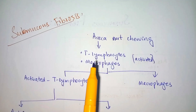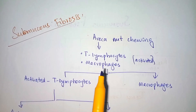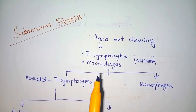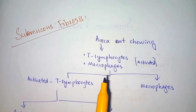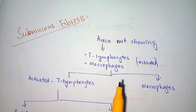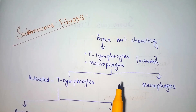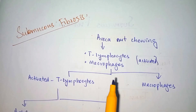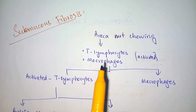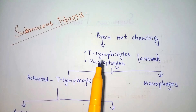When we take areca nuts in the form of paan, there is production of T lymphocytes and macrophages due to activation of the immune system. These activated T lymphocytes and macrophages increase in the body, along with a high CD4 to CD8 lymphocyte ratio in the sub-epithelial connective tissue. This suggests that oral submucous fibrosis is primarily a cellular immune response, though there is also a minor role of humoral immunity involving B lymphocytes.